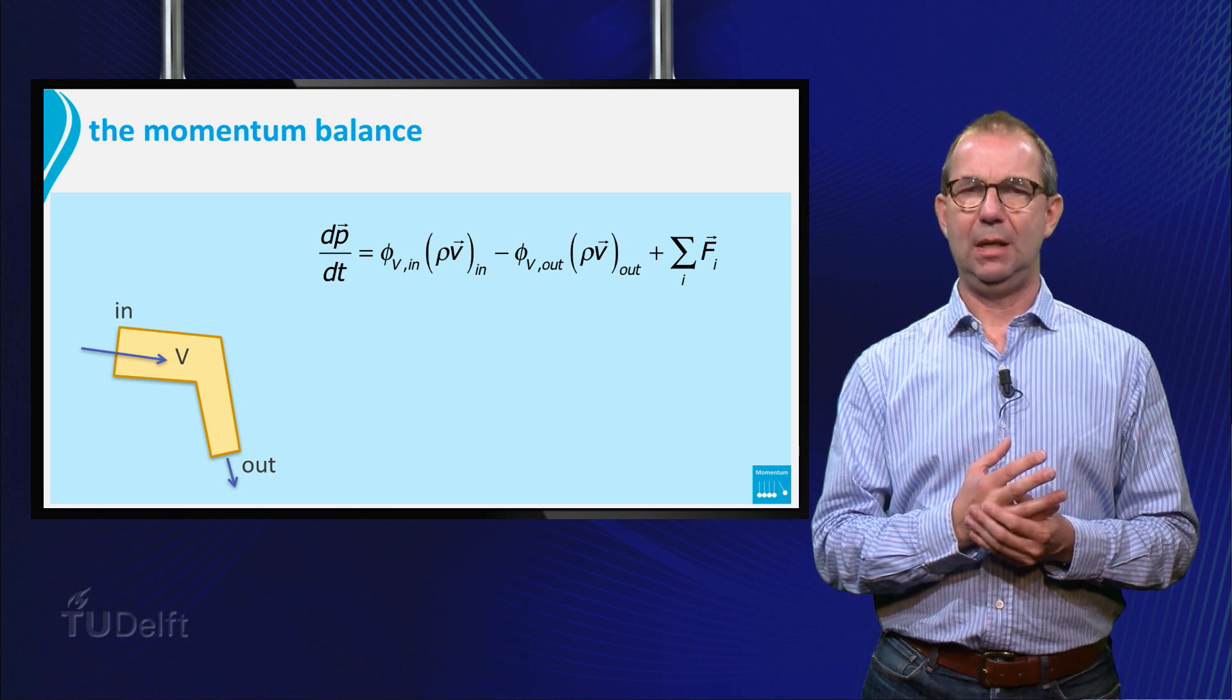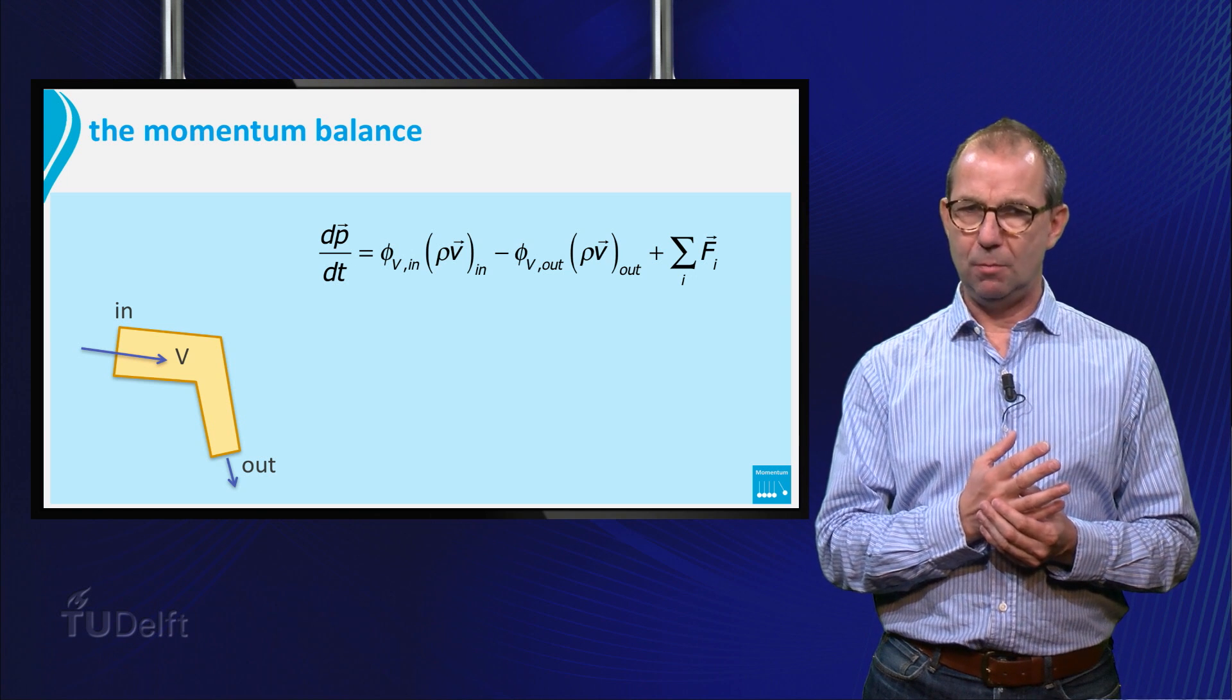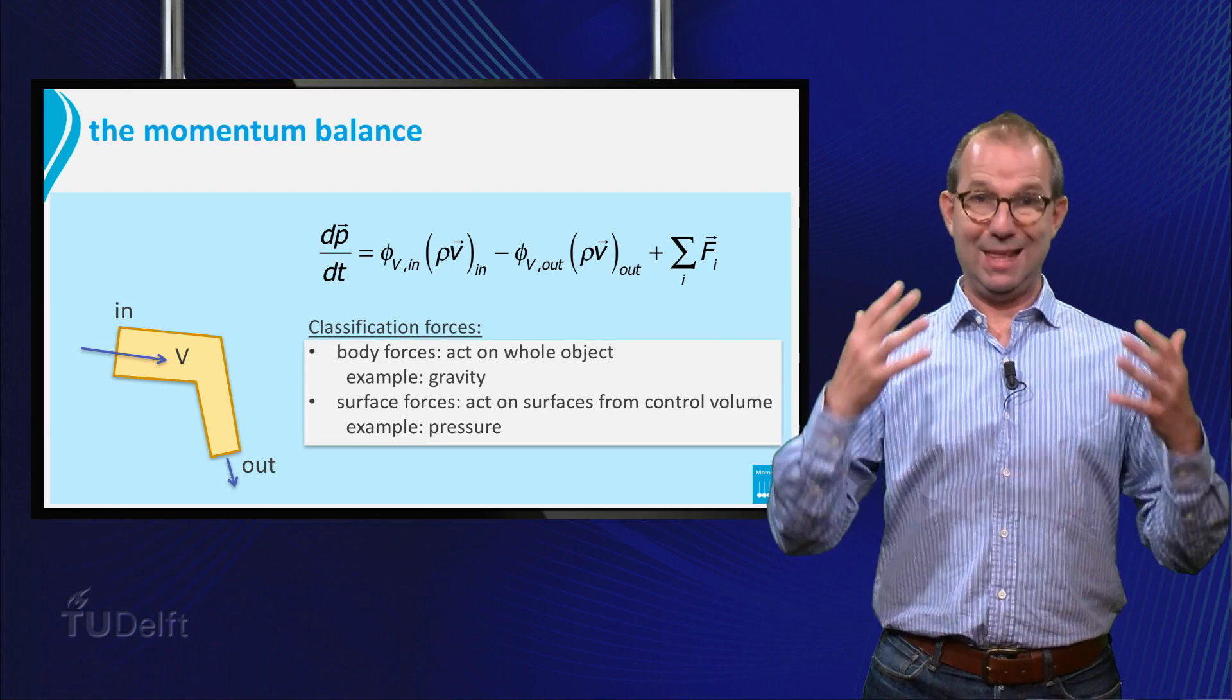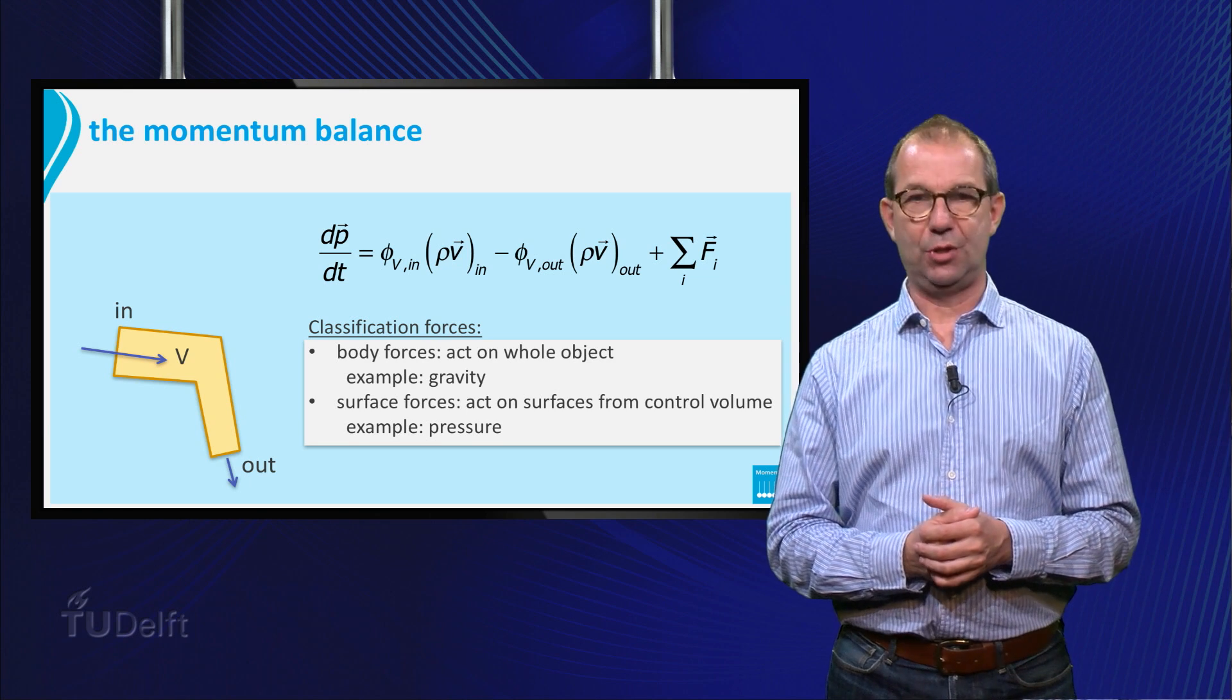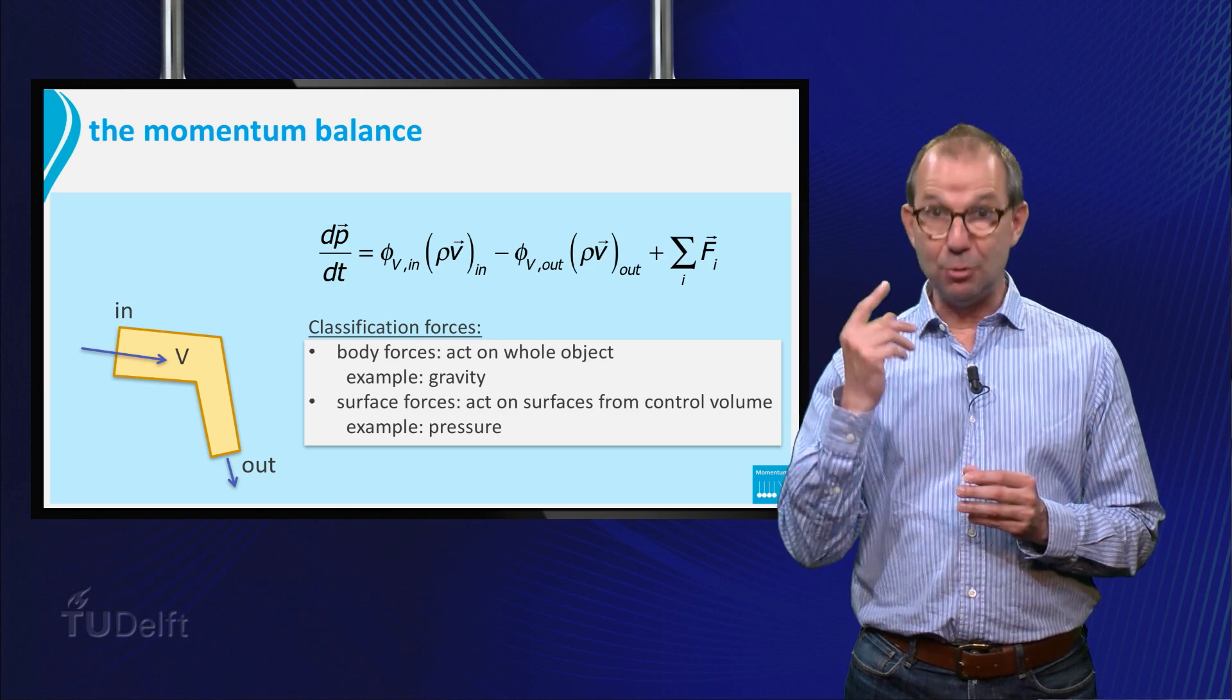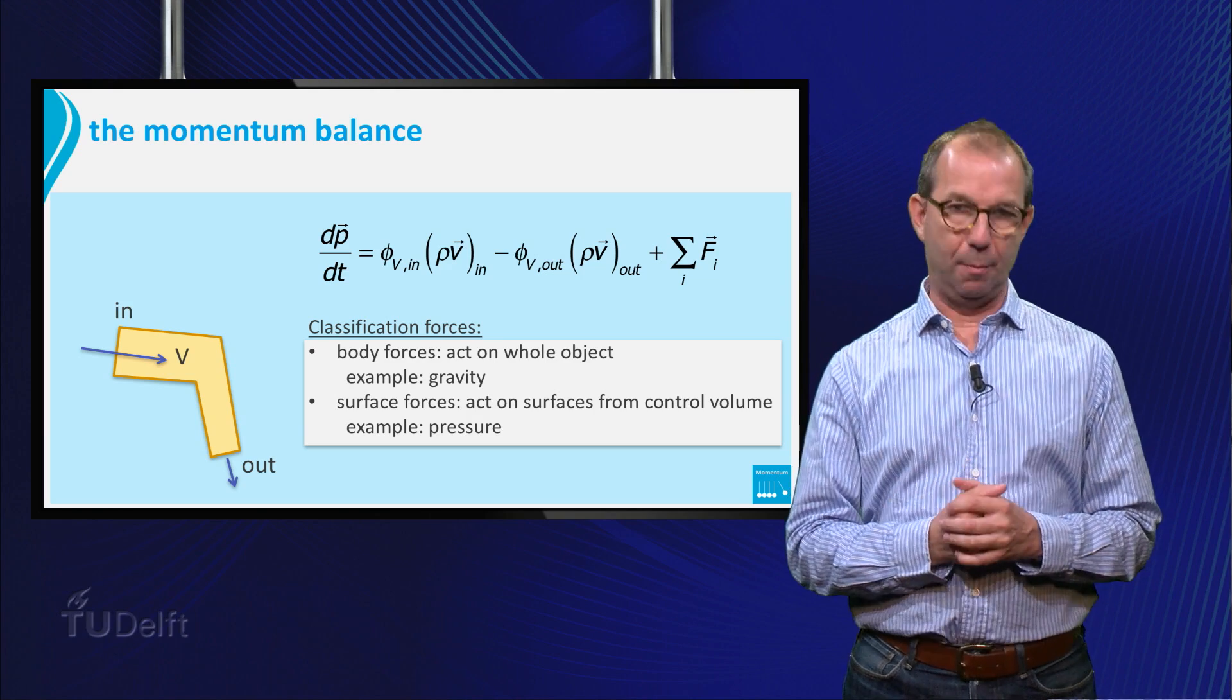As a next point, it is handy to think a little about the forces. We can distinguish two types. Body forces that act on the entire object, gravity is a good example, and surface forces that are felt only via the surfaces, the boundaries of the control volume. Here pressure is a good example.